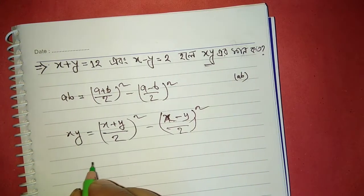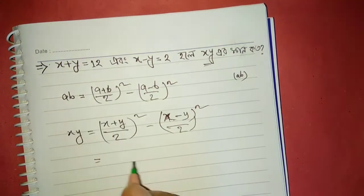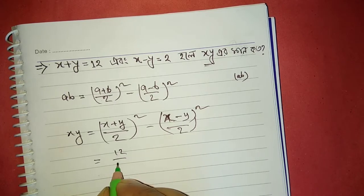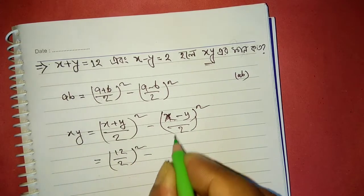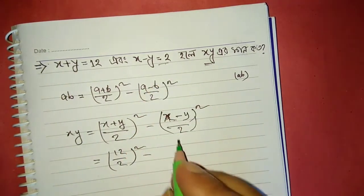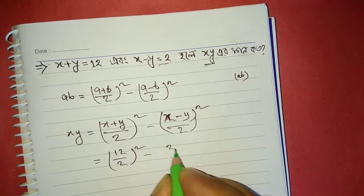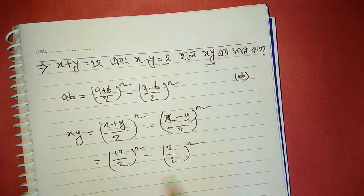1 plus x plus y divided to whole square minus x minus y minus 2 is equal to whole square.